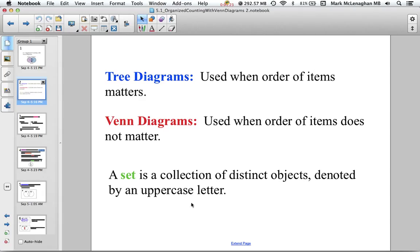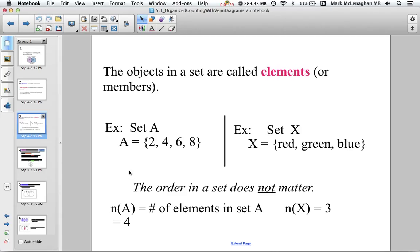The set contains objects, and we usually talk about the characteristics of the objects. The objects inside the set are usually called elements or members. For example, set A, where set A equals {2, 4, 6, 8}. Those would have four elements or four numbers. We use the curly brackets to denote that this is a set.